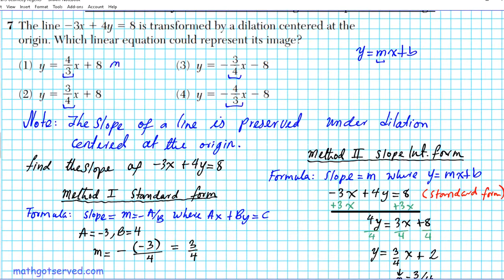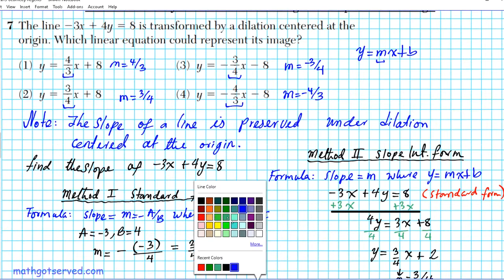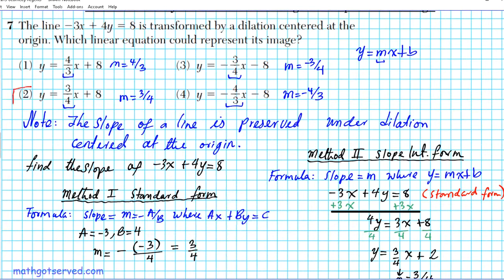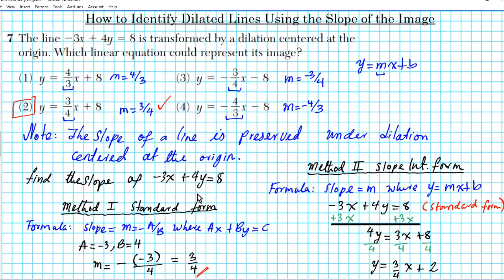For the first line m is 4 thirds, for the second line m is 3 over 4, for the third line m is negative 3 over 4, and for the last line m is negative 4 thirds. The correct answer is option number 2 because it has exactly the same slope as the original line.